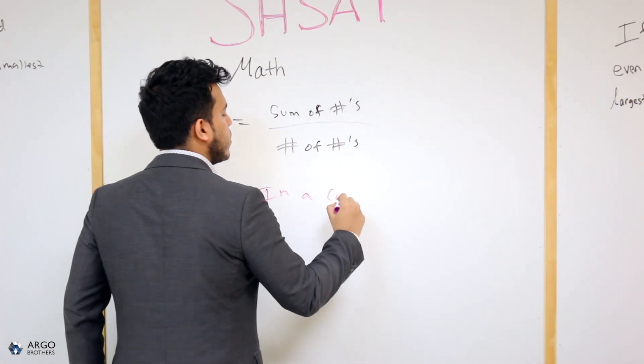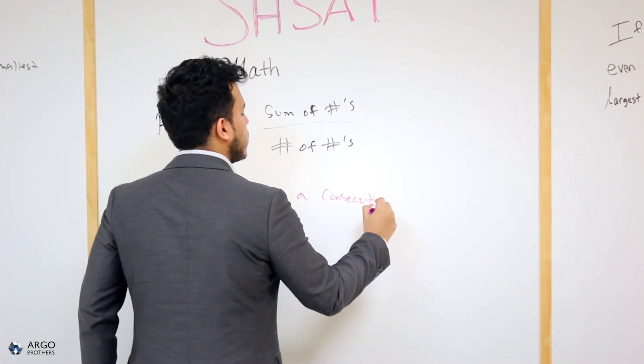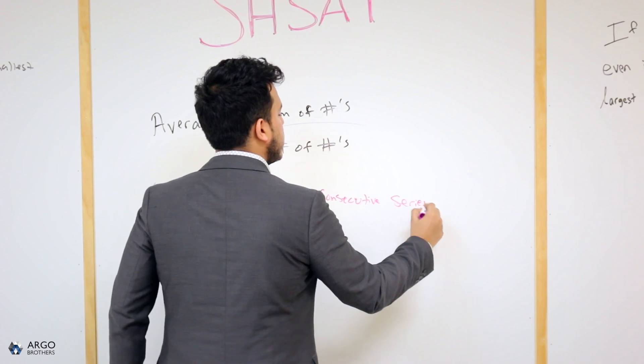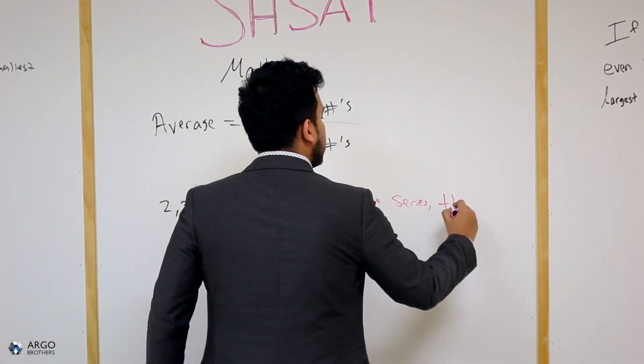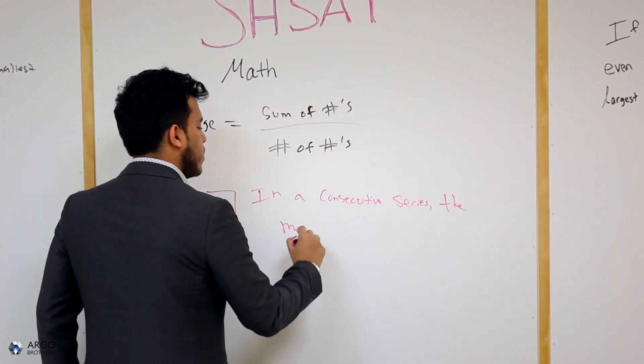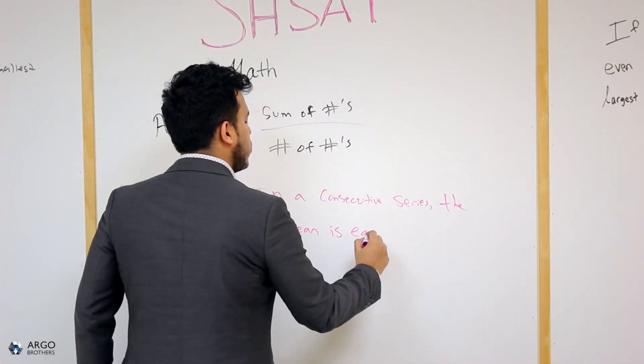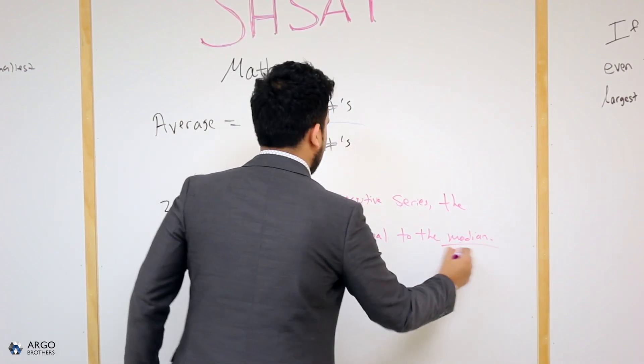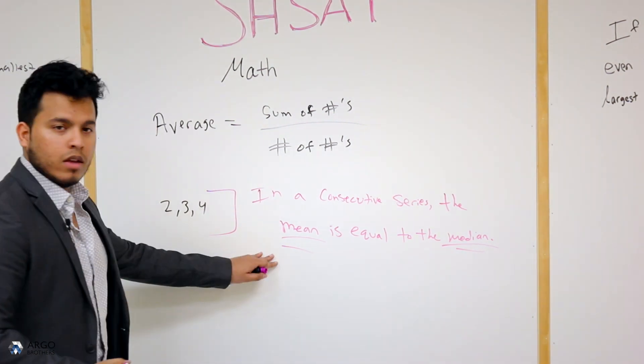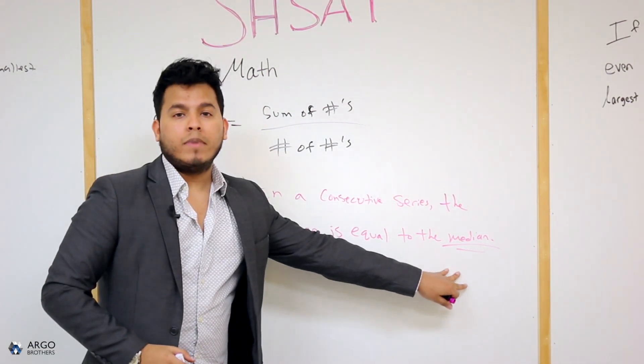And that rule is, in a consecutive series, in a consecutive number series, the mean is equal to the median. What does that mean? So the average, the mean, is equal to the median.